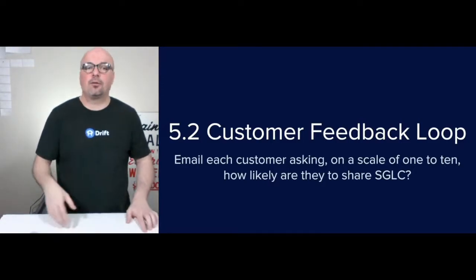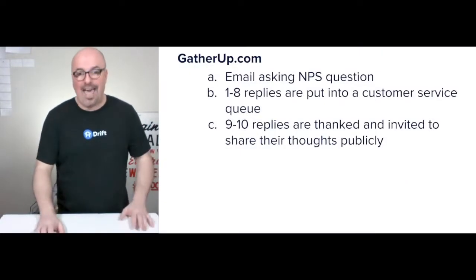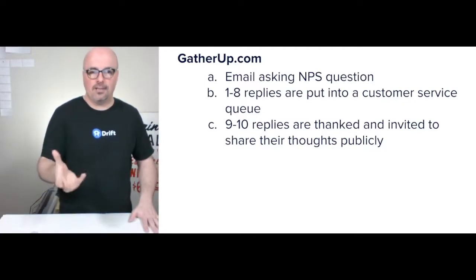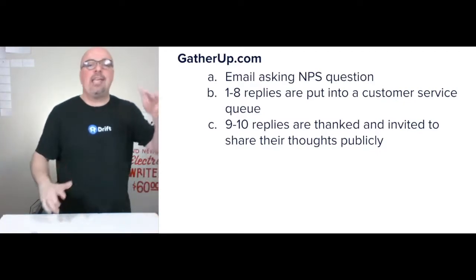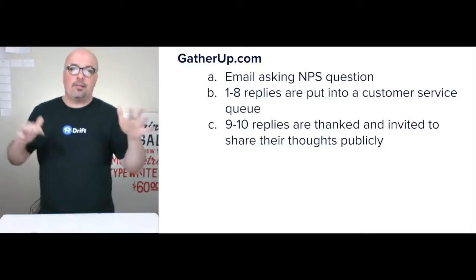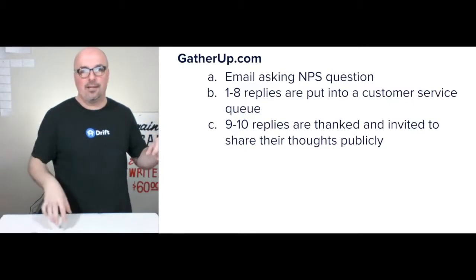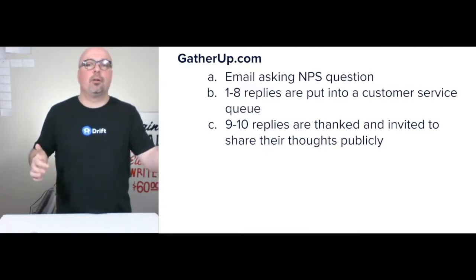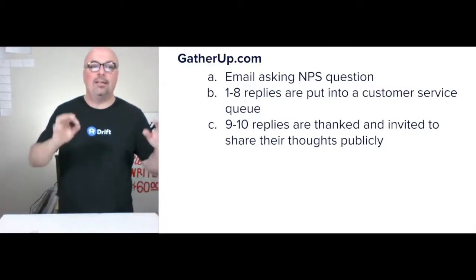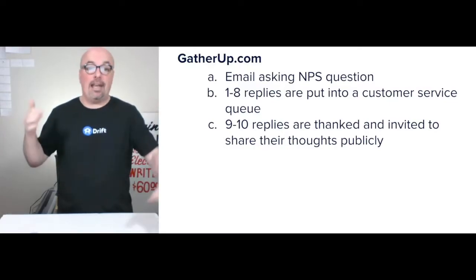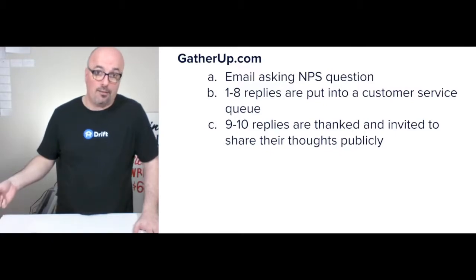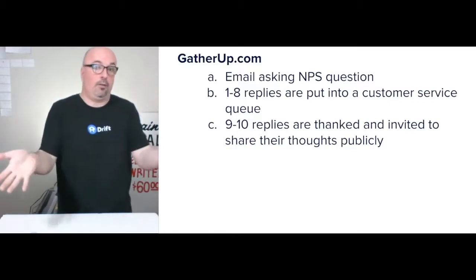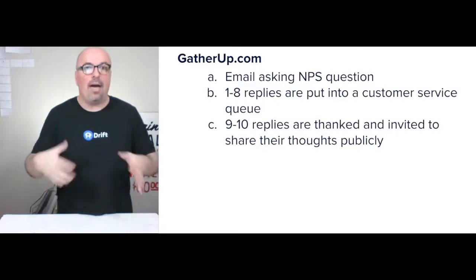The customer feedback loop: I use gatherup.com — it used to be Get Five Stars but they rebranded a few years back. They email what's called an NPS question — a one-to-ten scale Net Promoter Score. How likely are you to share this brand? One-to-eight replies go into a customer service queue, and nines and tens are thanked and invited to share their thoughts publicly, with shortcut buttons to different profiles where they can type in whatever they want.